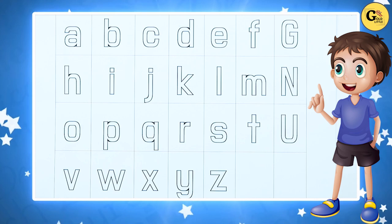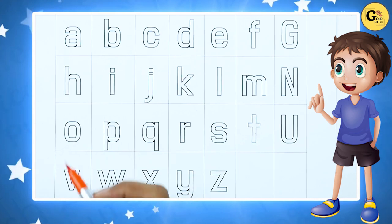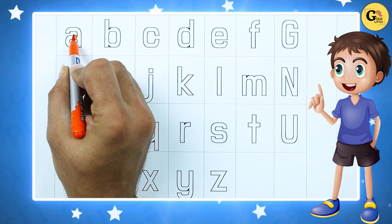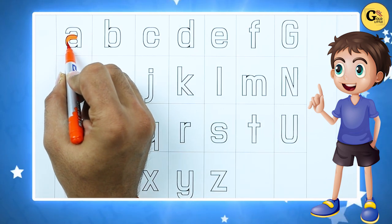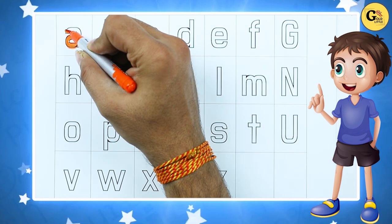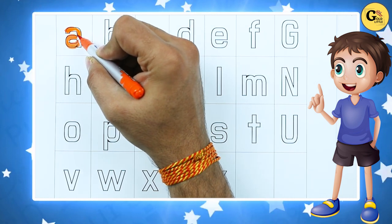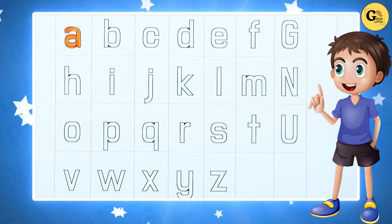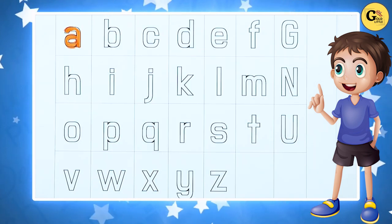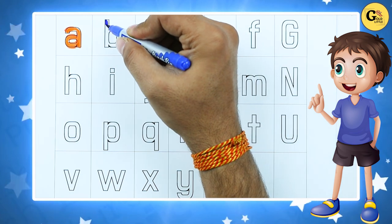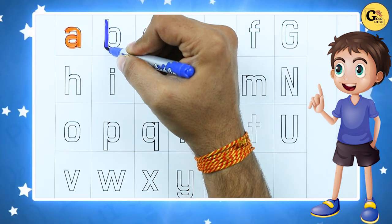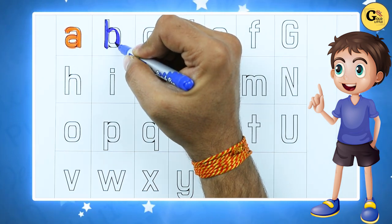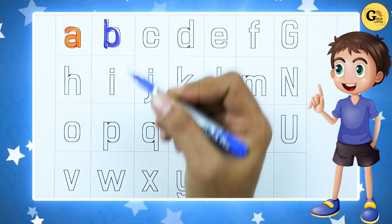Let's start. Make small a — a for apple. It's a small b — B for ball.